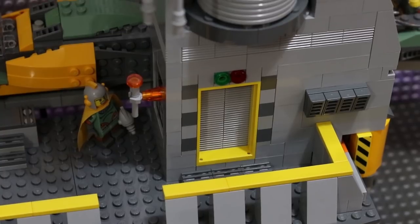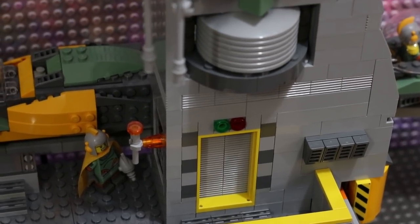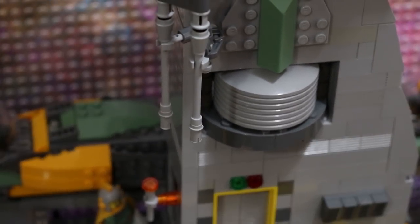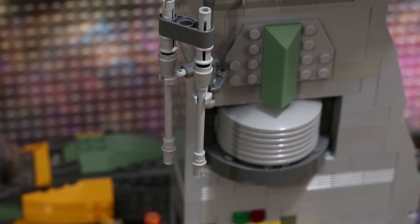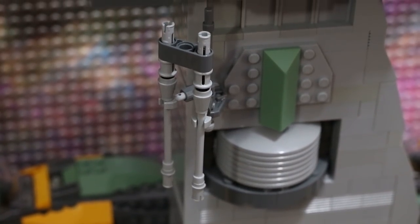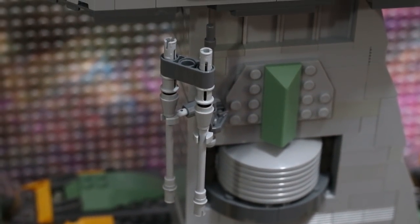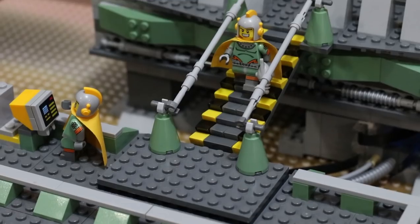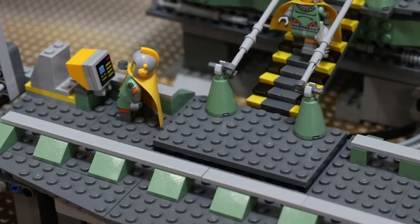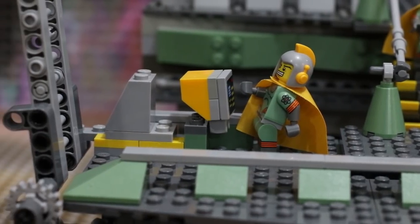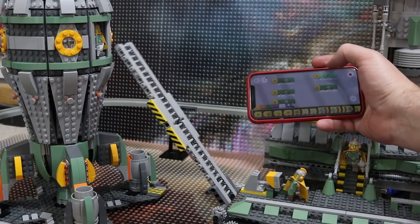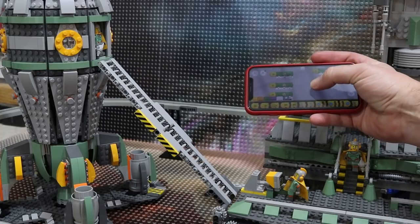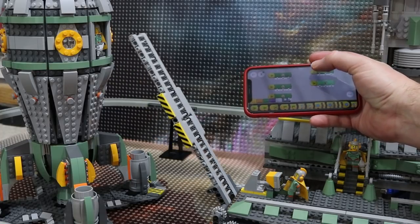The front of the tower features a space door where minifigures can access the interior, as well as an antenna array to send and receive transmissions throughout the outpost and the surface of the planet. From here, minifigures can walk down a set of stairs to the boarding platform. Another Retro Spaceman minifigure stands at the control station, and with the help of my powered up app, we can lower the ladder for boarding the rocket and raise it back up when it's time for takeoff.